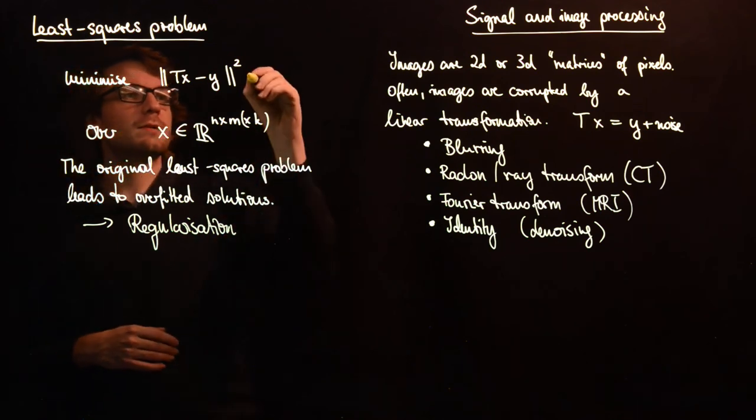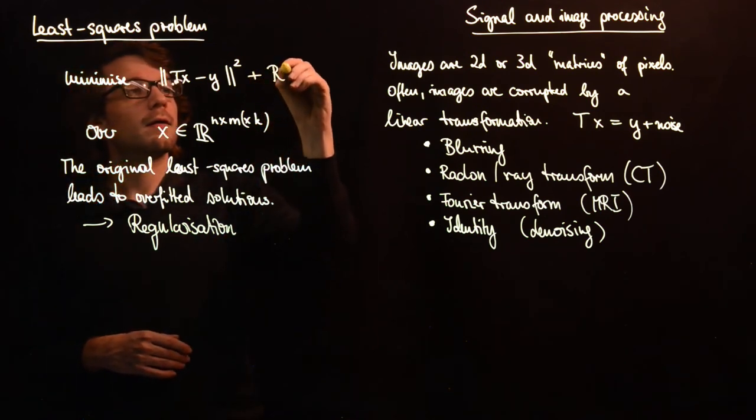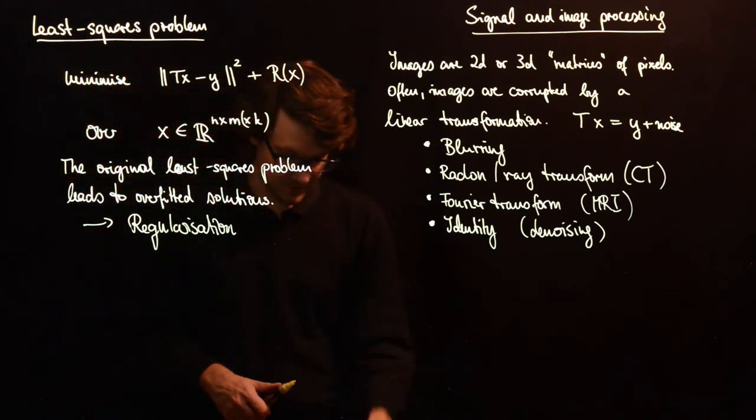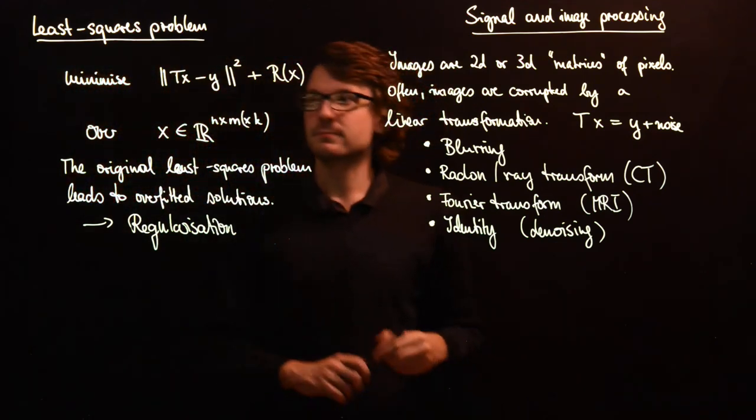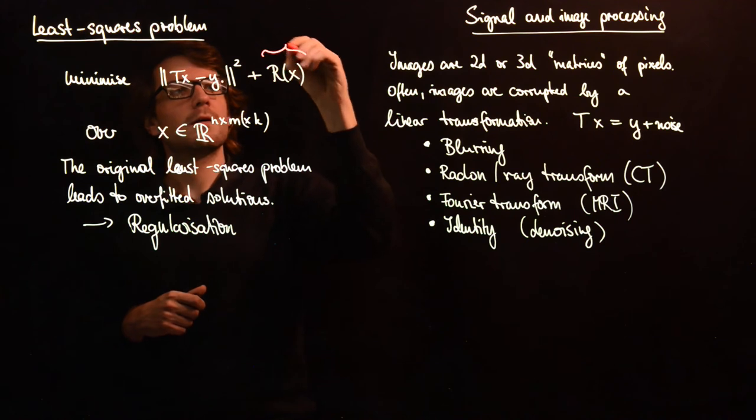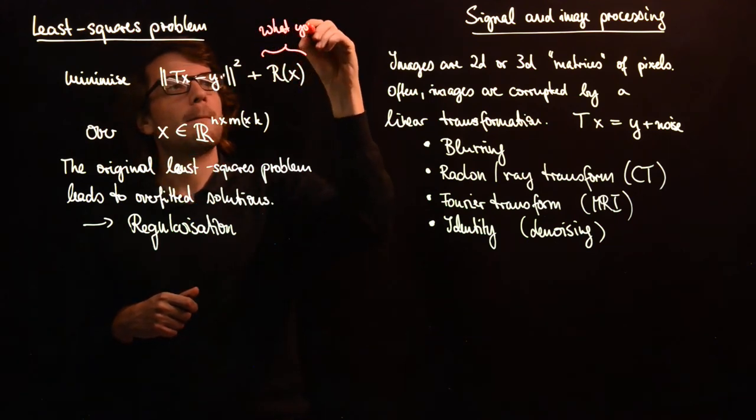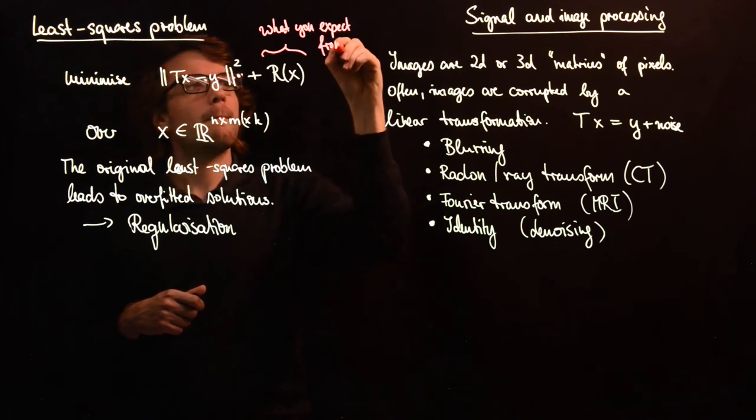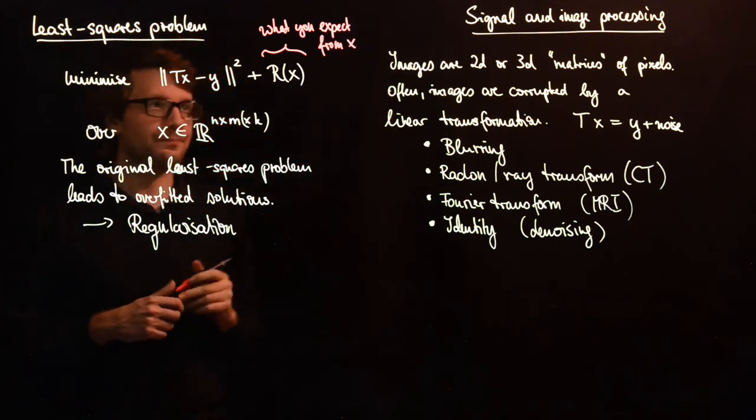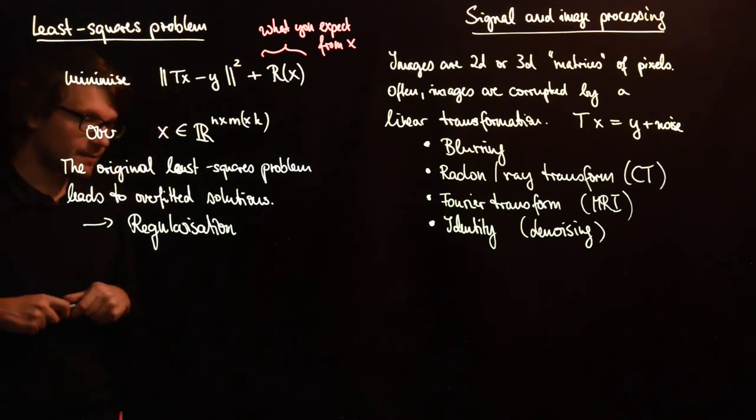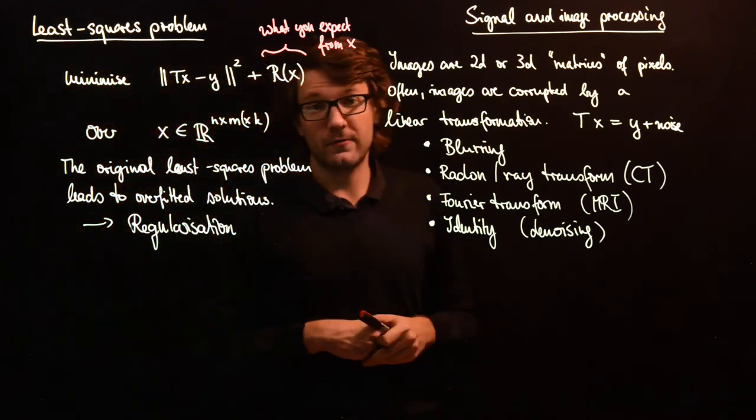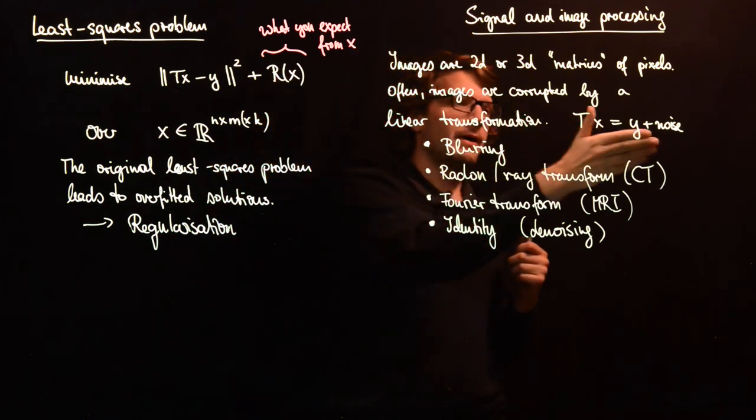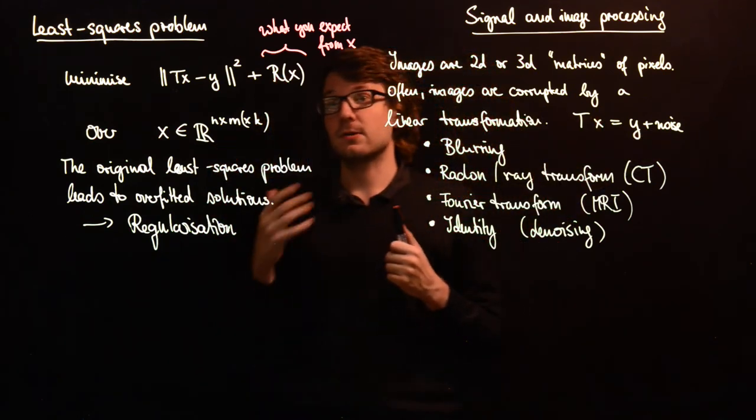This is the reason why you want to have so-called regularization. What you do is you add something, some kind of prior information here. This is what you expect from x.